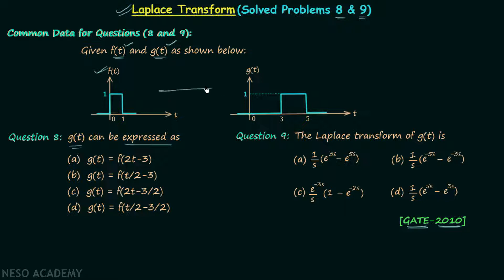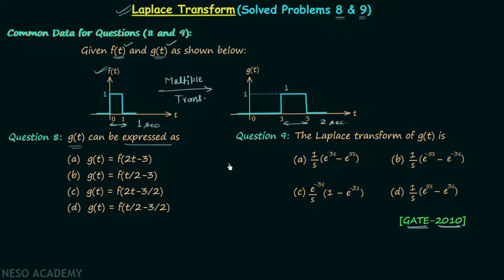We are required to perform multiple transformations on signal f(t) to get signal g(t). When you compare the two waveforms you will find the duration for which f(t) equals 1 is 1 unit, or 1 second. In the case of signal g(t), the duration for which g(t) is high is 2 seconds. So one thing is clear: we are required to perform the time scaling operation.